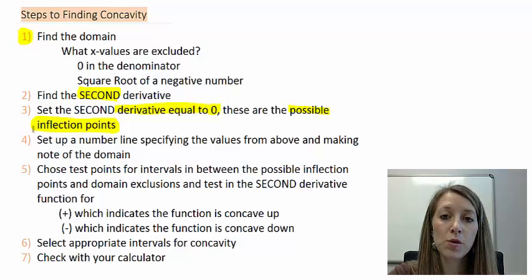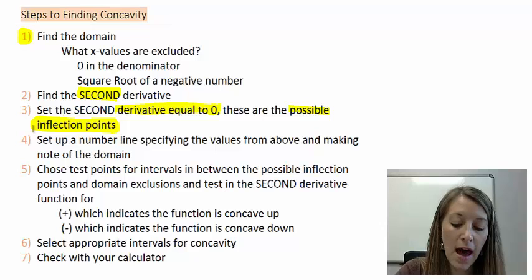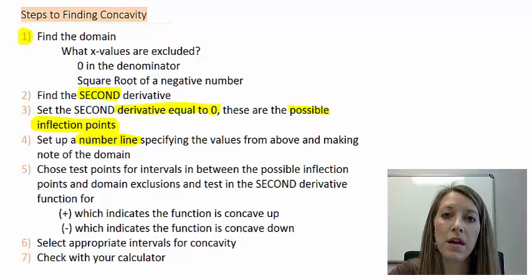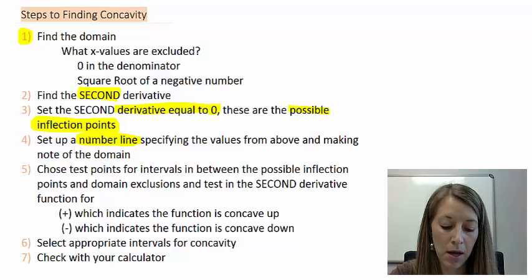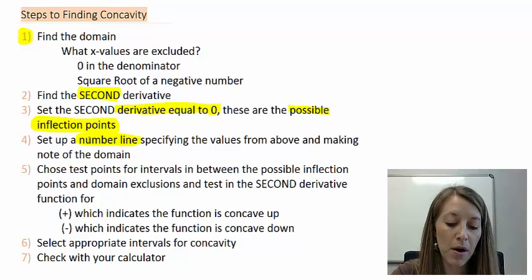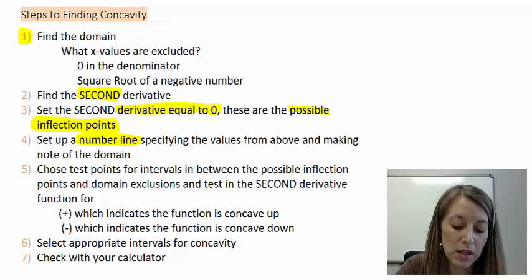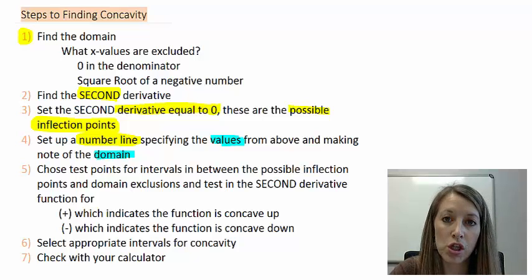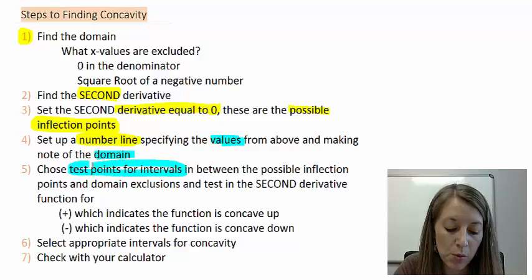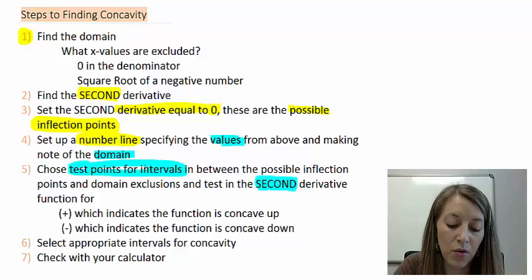So if we know those points where it switches between concavity, we need to figure out where it's concave up and concave down. We do that by using the number line — the same thing we did with increasing, decreasing, max, and min. Once we set up our number lines using the inflection points and the domain restrictions, we test the intervals in between those points in the second derivative, because that's our focus here.